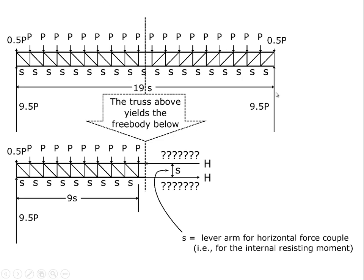That means the reactions at each end have to be half of 19P, or in other words, 9.5P.